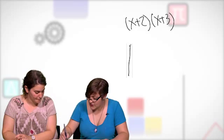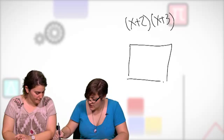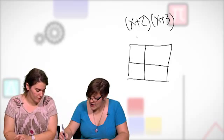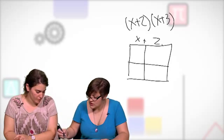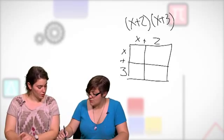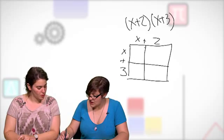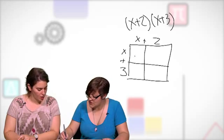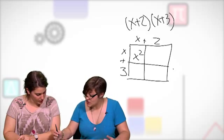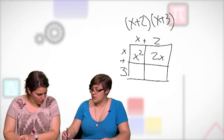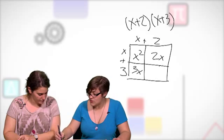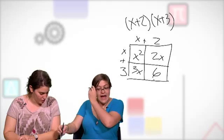So you draw a rectangle like that and then you divide it like this. And so you're multiplying x plus two times x plus three, right? So the area of this rectangle here is x times x. So the area of this is x squared. This one here is x times two, so it's two x. And this one here is going to be three times x, three x. And this one is just three times two. So that's six, right? So you just have to add all of it.